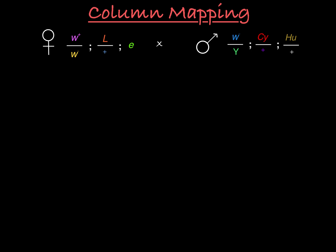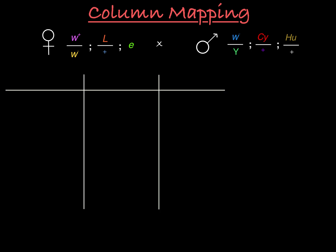Now for the column mapping. We'll start by drawing columns for each chromosome involved in our cross — the sex chromosomes, chromosome 2, and chromosome 3. We could also consider a fourth column for chromosome 4, but since our parent genotypes in this example don't include chromosome 4, we will leave it out of our column map.